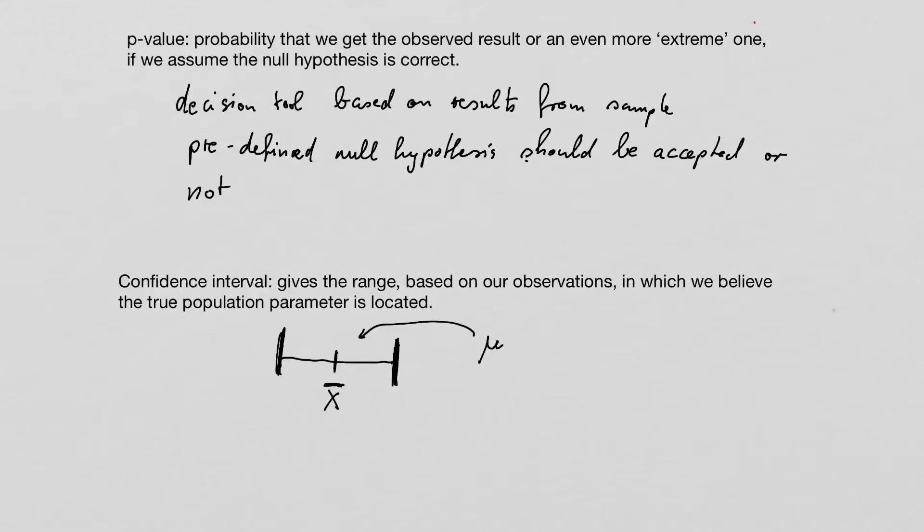The confidence interval shows something totally different. It shows us basically where we believe the true population mean or true population parameter is located based on our sample. It doesn't give us a decision tool here like the p-value.